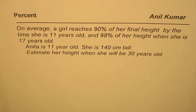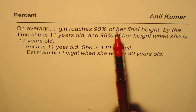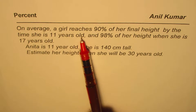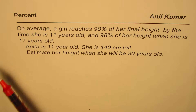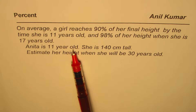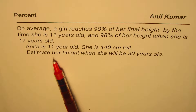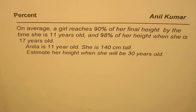I'm Anil Kumar and here is an application question on percent. We'll figure out the height from the given situation. The question is: on average, a girl reaches 90 percent of her final height by the time she is 11 years old, and 98 percent of her height when she is 17 years old. Anita is 11 years old, she is 140 centimeters tall. Estimate her height when she will be 30 years old.